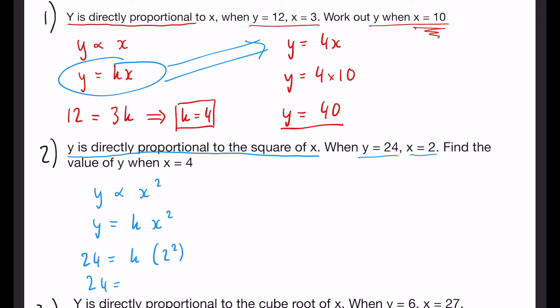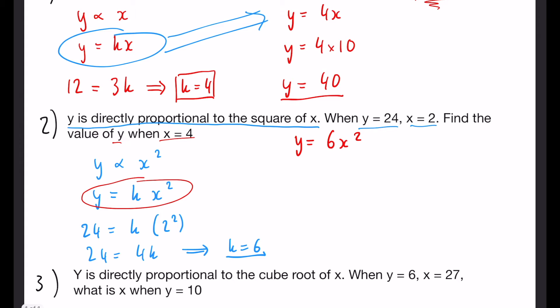Now 2 squared we know as 4 so that's going to be 4k which we can write as k equals 6. So again now that we know k we want to take this equation rewrite it as y equals 6x squared and then we need to find the value of y when x equals 4. So all we do again is substitute 4 in so y equals 6 multiplied by 4 squared 6 times 16 so y is going to equal 96.